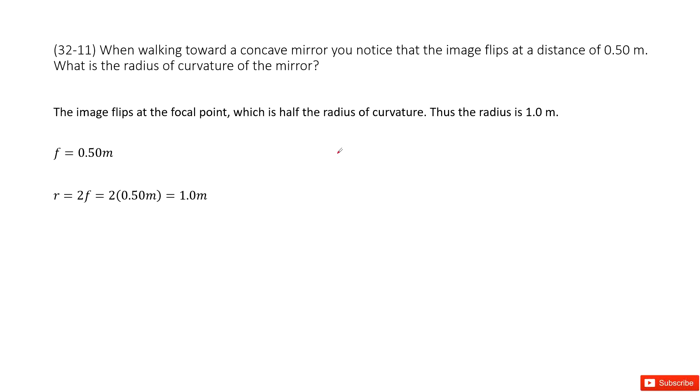We notice the image flips at a distance of 0.4 meters. As we know in this chapter, the image flips at a focal point. So the focal length f is 0.4 meters.